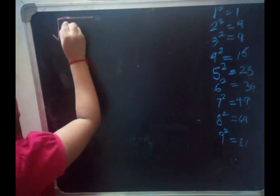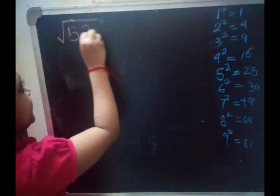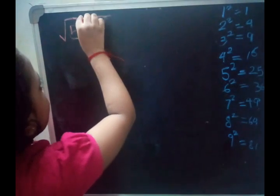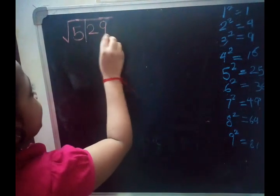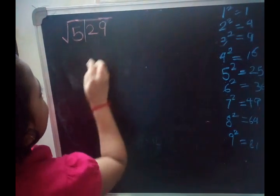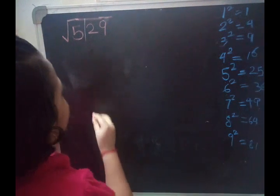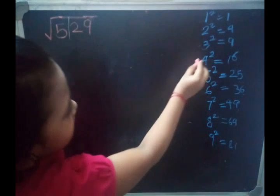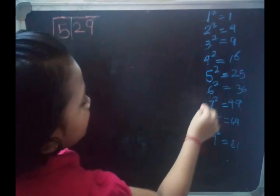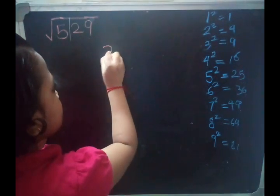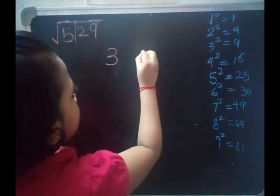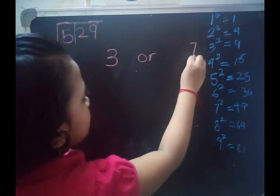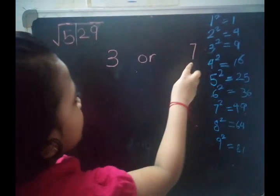First, I will take one example: 529. We have to separate this — on the right-hand side keep 2 digits, and the remaining digit on the left-hand side. Here the right-hand side ending digit is 9. If the ending digit is 9, we will get 3 or 7 in the next place.